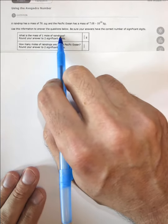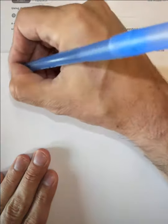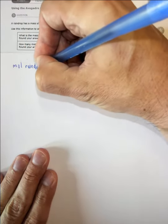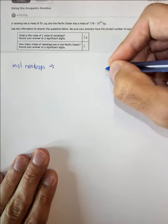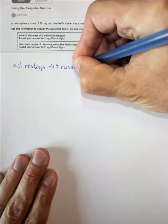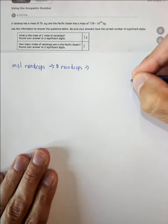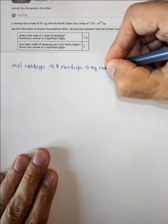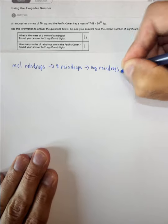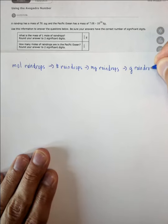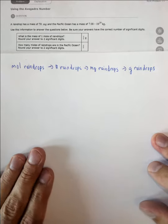We want to know the mass of one mole of raindrops. As a plan of attack, we want to go from moles of raindrops to the number of raindrops, then find the milligrams of raindrops in one mole, because we can't convert directly to grams, and then finally find the grams of raindrops in one mole. This is our plan of attack.